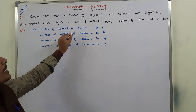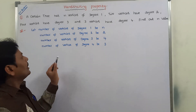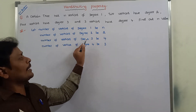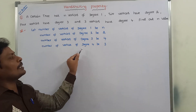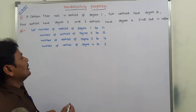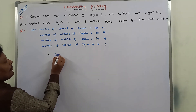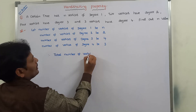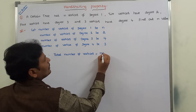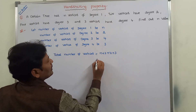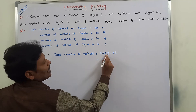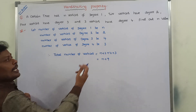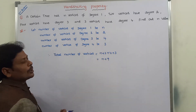Let the number of vertices of degree 1 be n, number of vertices of degree 2 be 2, number of vertices of degree 3 be 4, and number of vertices of degree 4 be 3. Therefore, the total number of vertices is equal to n + 2 + 4 + 3, which equals n + 9.